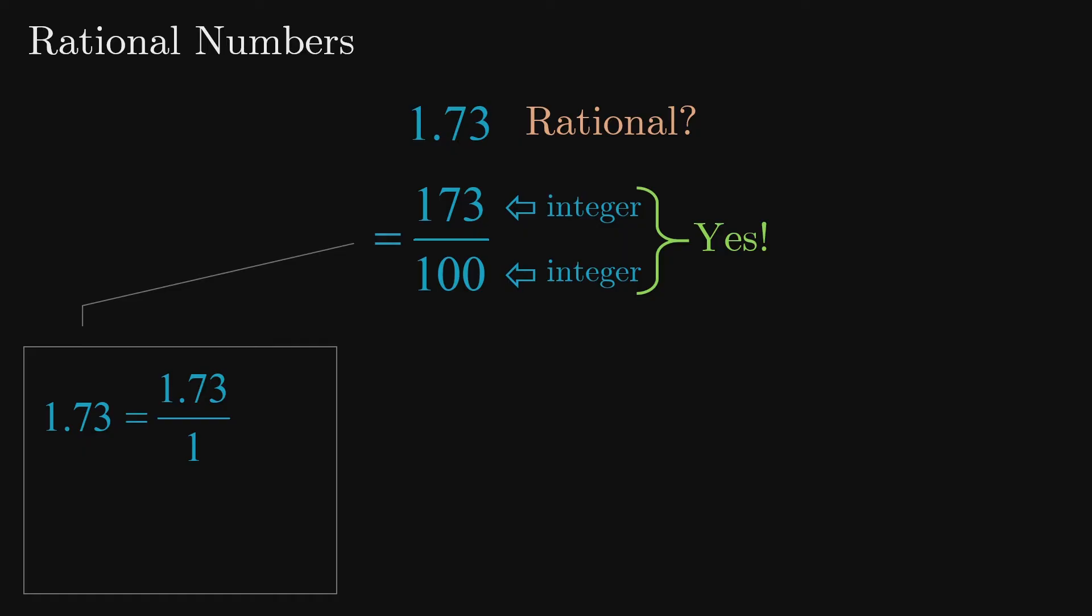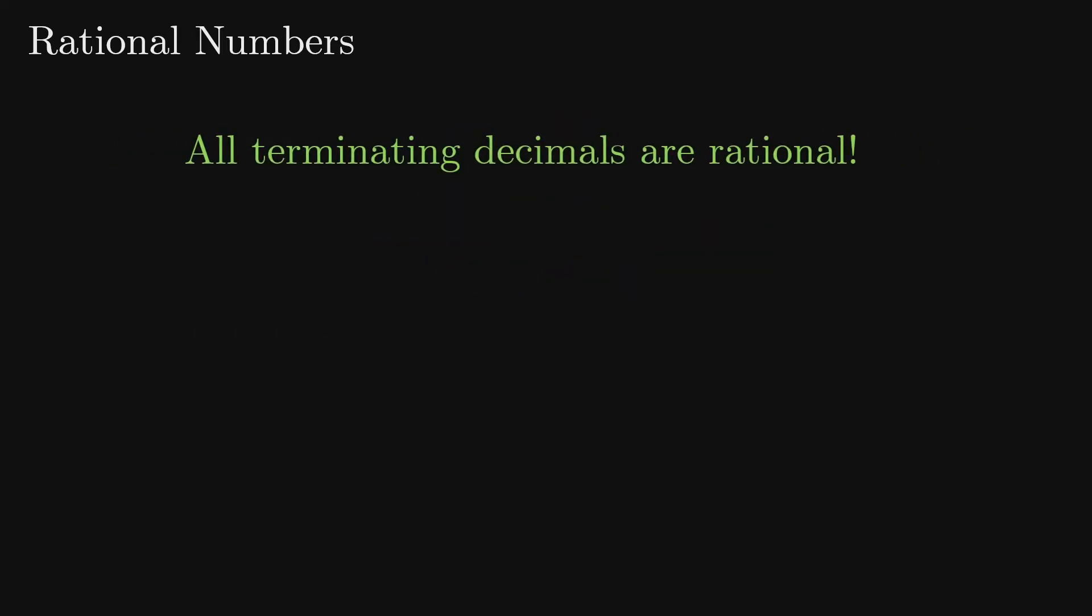So we can use multiplication by 100 to get rid of the decimal in the numerator. And that leaves us with integers for both the numerator and the denominator. Based on what we've seen here we can quickly conclude that all terminating decimals are rational numbers.